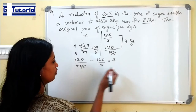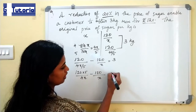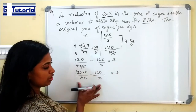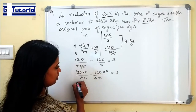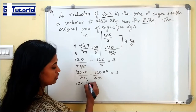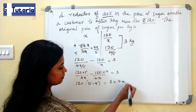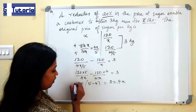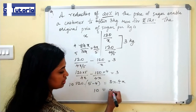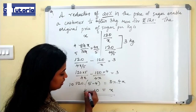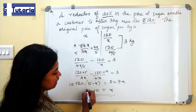Solving: 120 × 5/(4X) minus 120/X equals 3. Taking LCM as 4X: 120 × (5 − 4)/(4X) equals 3, so 120/(4X) equals 3. Therefore 120 equals 12X, so X equals 10 rupees. The original price of the sugar is 10 rupees per kg. We have now covered every kind of problem that can be asked from percentages.